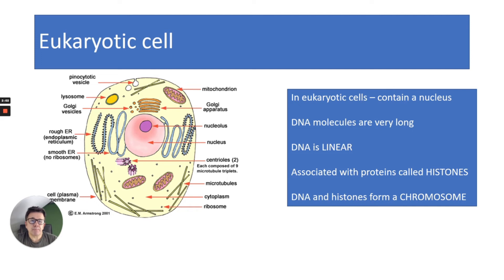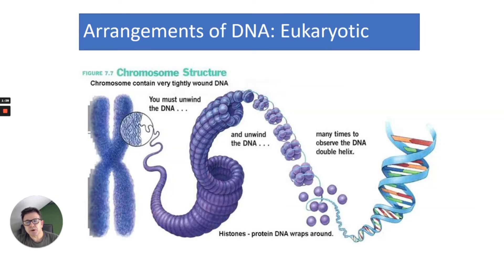Eukaryotic cells are a bit more complex — they contain membrane-bound organelles and particularly the nucleus. DNA molecules in the nucleus are very long. DNA is linear, so it's not in a circular plasmid, and it's associated with proteins called histones. You'll learn more about the role of histones when you study the control of gene expression. DNA and histones together form chromosomes. When a chromosome is unwound you can see it's made of long linear pieces of DNA wrapped around proteins called histones, forming the familiar double helix structure.